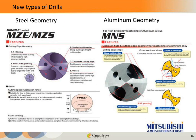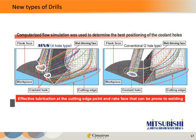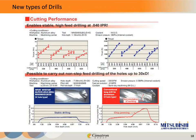Here we see two different geometries: on the left is geometry well suited for steel, and on the right is geometry suited for aluminum. There's a lot of engineering done to fit everything about the tool to its application and material. Computerized flow simulation was used to determine the best position of the coolant holes — in this particular drill there are two coolant holes per flute, properly positioned to avoid gumming up the drill with aluminum.